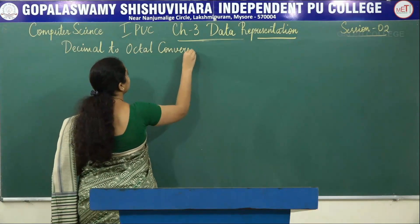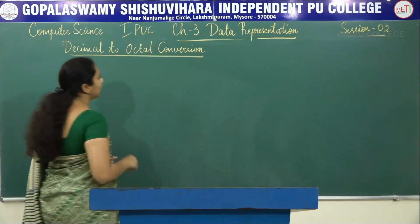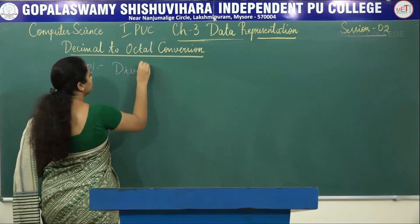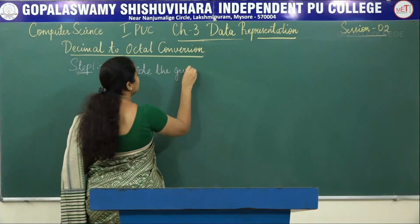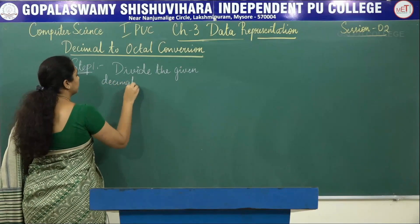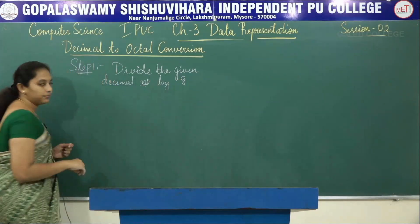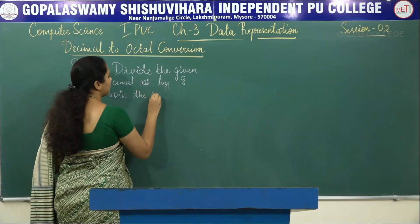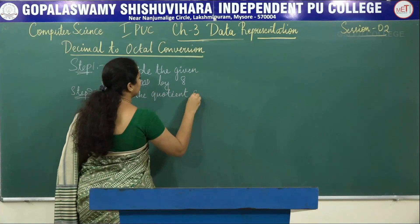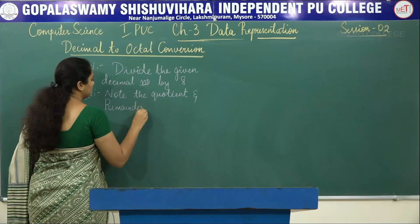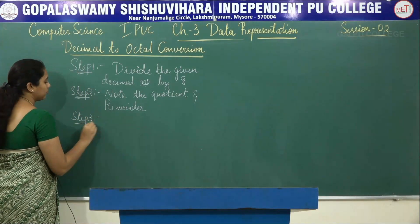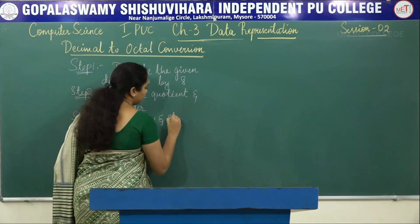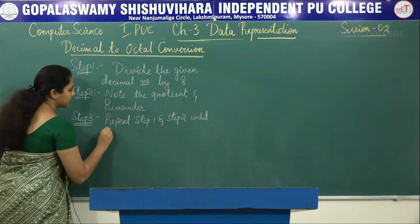The first step is to divide the given decimal number by 8. Step 2: note the quotient and remainder. Step 3: repeat step 1 and step 2 until the quotient becomes 0.